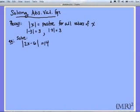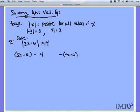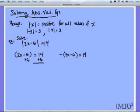Recalling that whatever's inside can be positive or negative to get the same answer, I can split this into two separate problems: either 2x minus 6 equals 14, or negative 2x minus 6 equals 14. Because if I put absolute value bars around the negative version, this negative will go away, just like it did with negative 3. Now I can simply solve as I would without the absolute values. Adding 6 to both sides gives 2x equals 20, then dividing by 2 gives x equals 10.